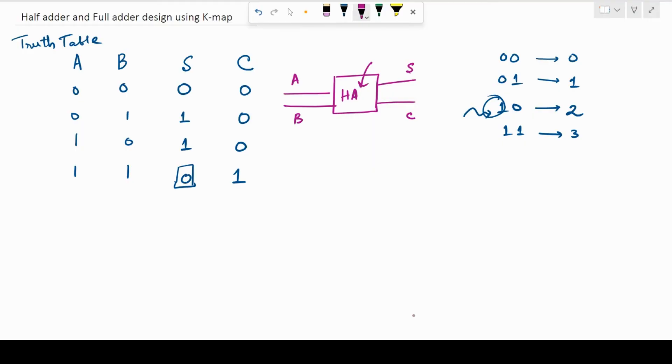So, we can do it generally by looking at the truth table and writing out the minterms and applying the Boolean expression. But today, I am going to use the K-map. So, I call it the two variable K-map because we are going to have only two inputs, A and B.